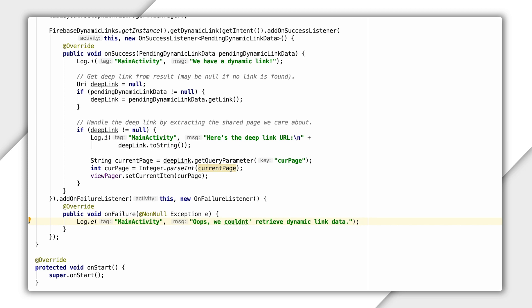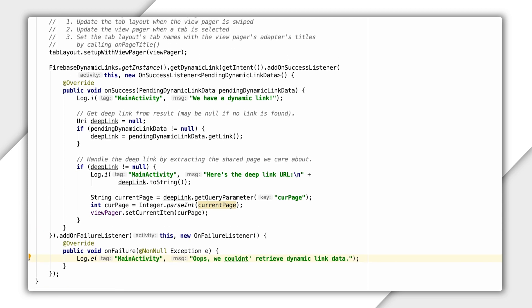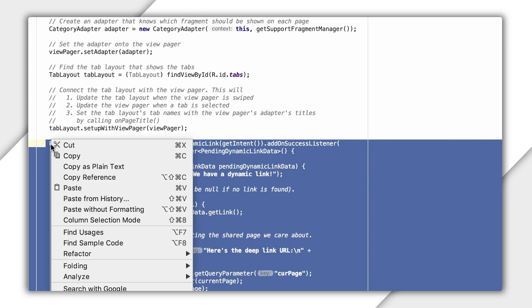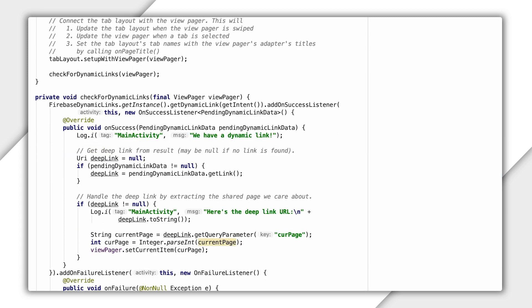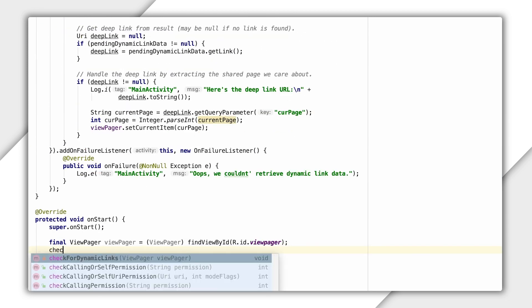So I'll add on failure listener and create this new anonymous failure listener here and implement its on failure method and then log the message for my main activity, oops, couldn't retrieve dynamic link data. Okay. Now, we'll also want to include the same call in our onStart method for our activity. So let me refactor what I'm doing here in a method called check for dynamic links. So I can call it both from onCreate and onStart. And now I'll make sure I'm calling them in both those methods. And there we have it.